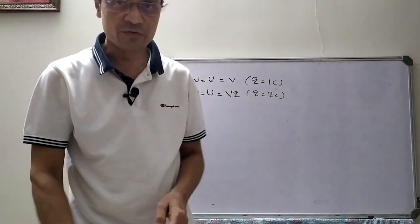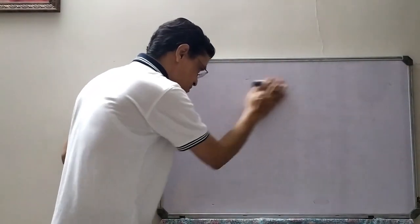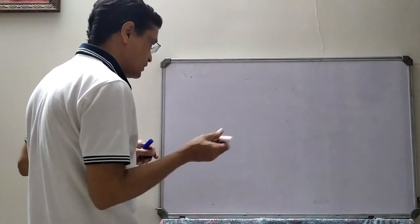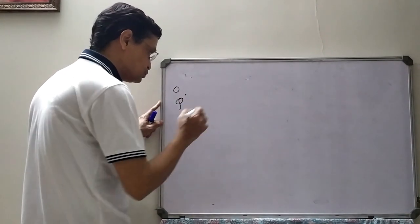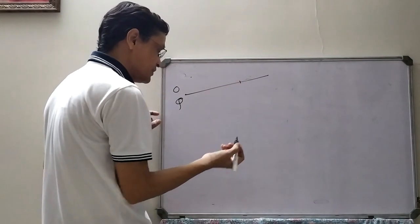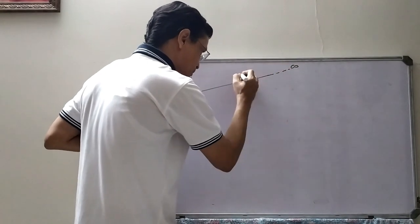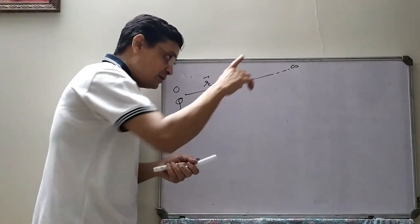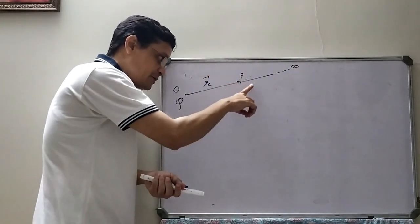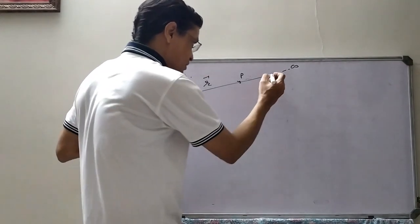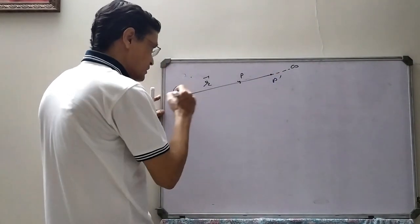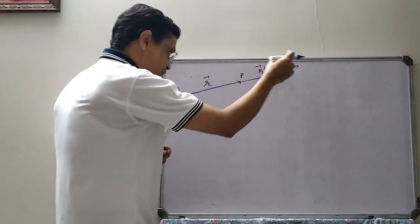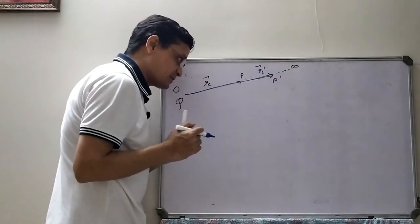One important property: the electric field is a conservative force. Today we are discussing the potential of a point charge. The point is O and the electric charge is plus Q. According to the definition, we bring one coulomb positive charge from infinity to point P, where P is at a distance R from O. The position vector from O to P is vector R.